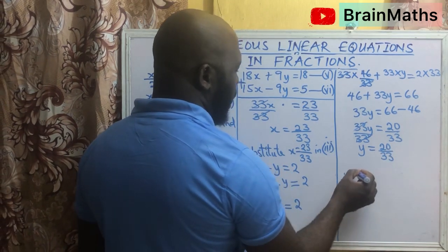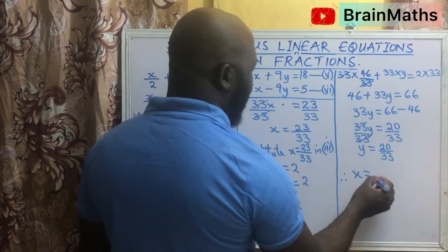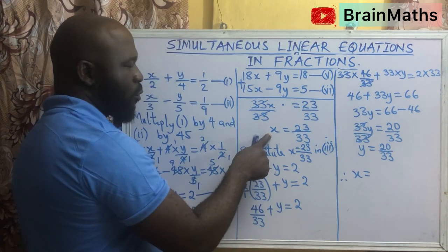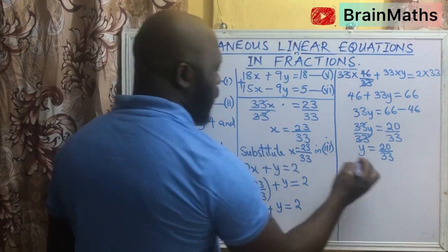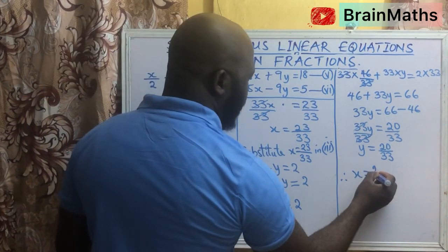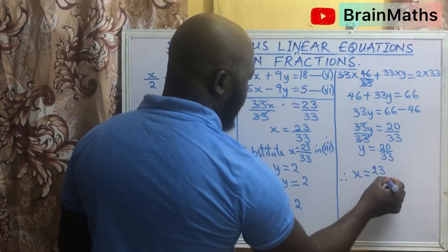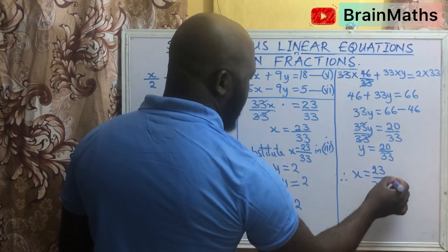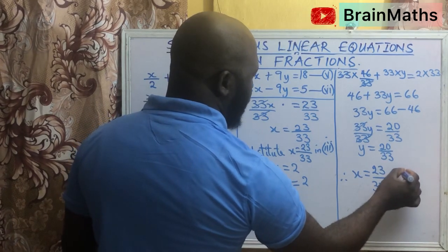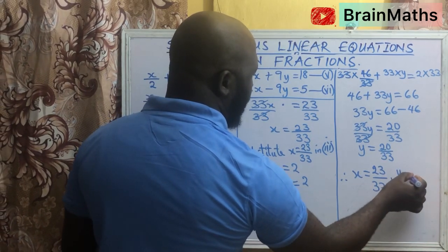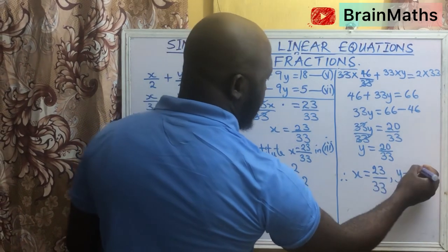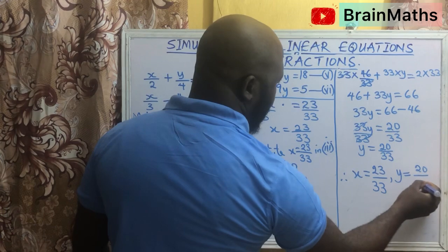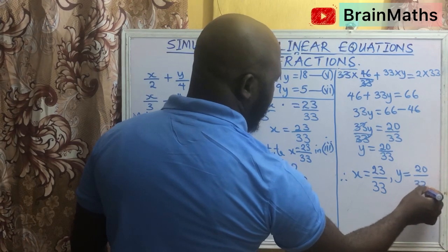Therefore, the value of x from our calculation is 23 over 33, while the value of y equals 20 over 33.